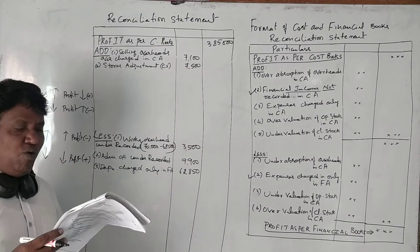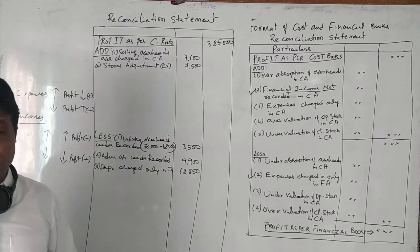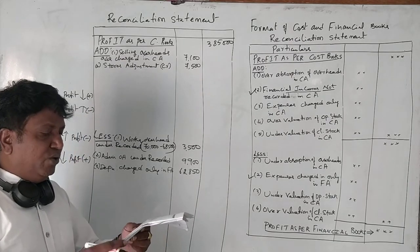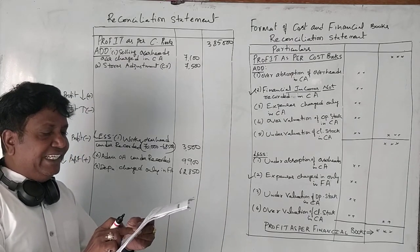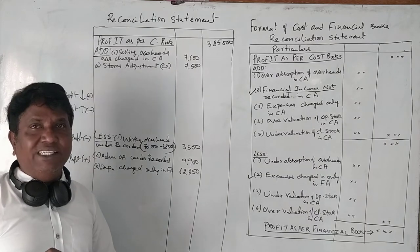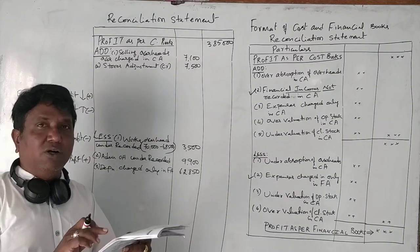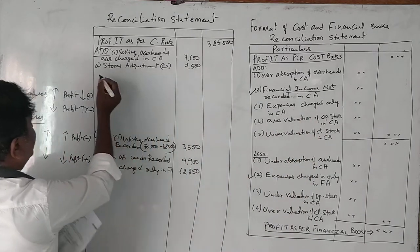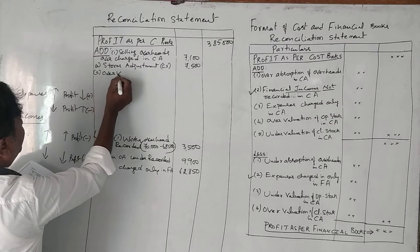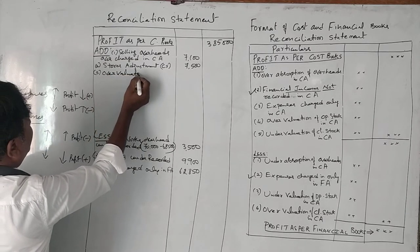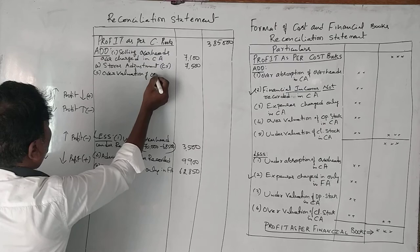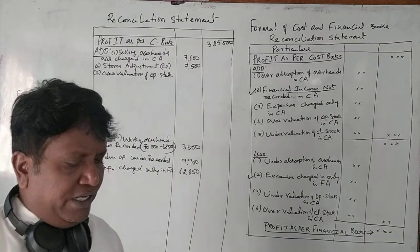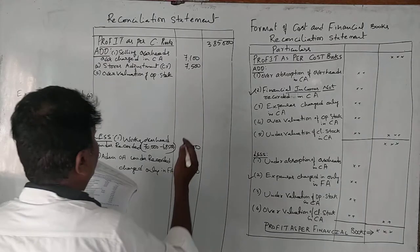Next is value of opening stock. Opening stock is valued in cost accounting as 86,400 but in financial books it is recorded as 75,000. In cost accounting it is recorded more — that is, over-valuation of opening stock. Over-valuation of opening stock: difference is 11,400 rupees to be deducted.